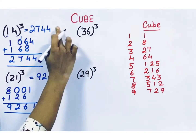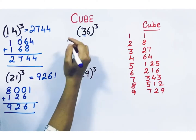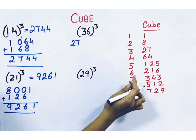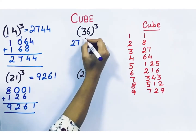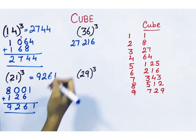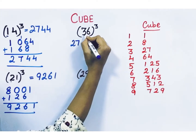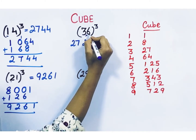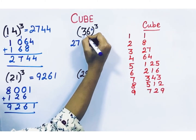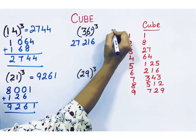Cube of 36. Take 3 — the cube of 3 is 27. Then take 6 — 6 cube is 216. It's a 3-digit number, so we write it as is. Next step: multiply 3 with 6, which is 18, then multiply with 3. So 3 into 6 into 3 is 54.